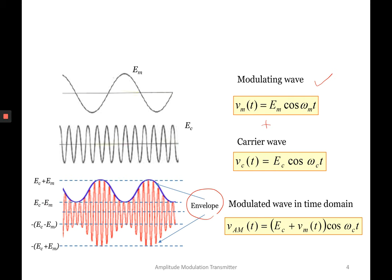When we have this envelope, the maximum peak is the summation of the amplitudes of the modulating signal and the carrier signal. The minimum point of the envelope would be the subtraction — carrier amplitude minus modulating amplitude. For the modulated wave equation in the time domain, we can use this equation but need to expand VMT to include the amplitude and frequency properties.